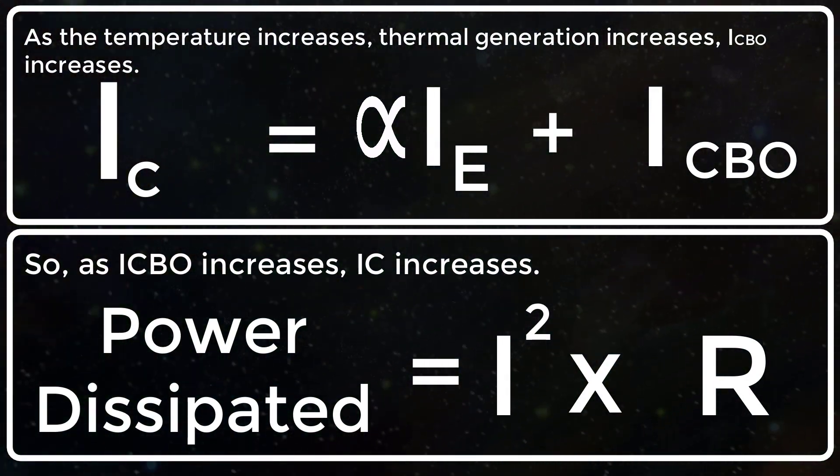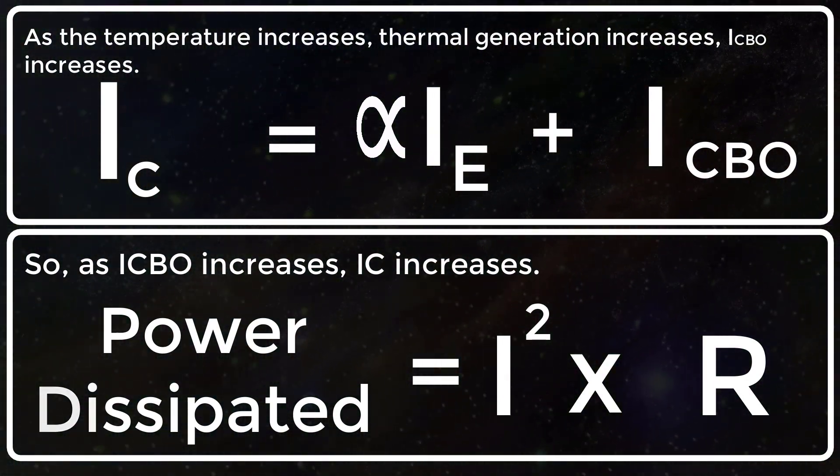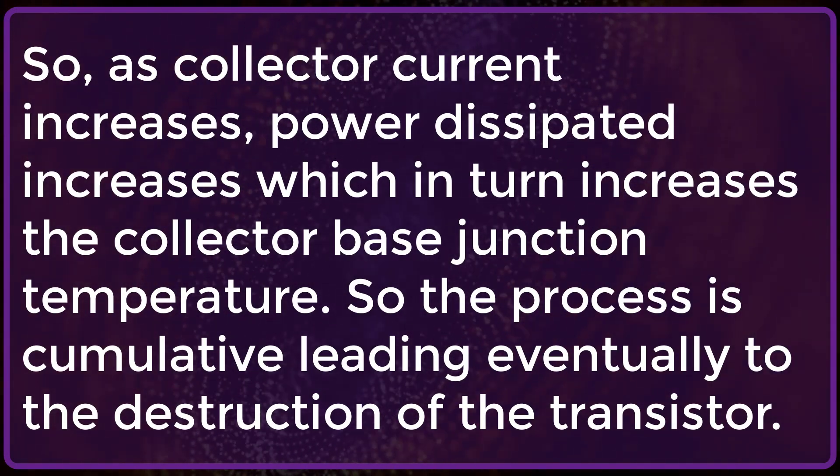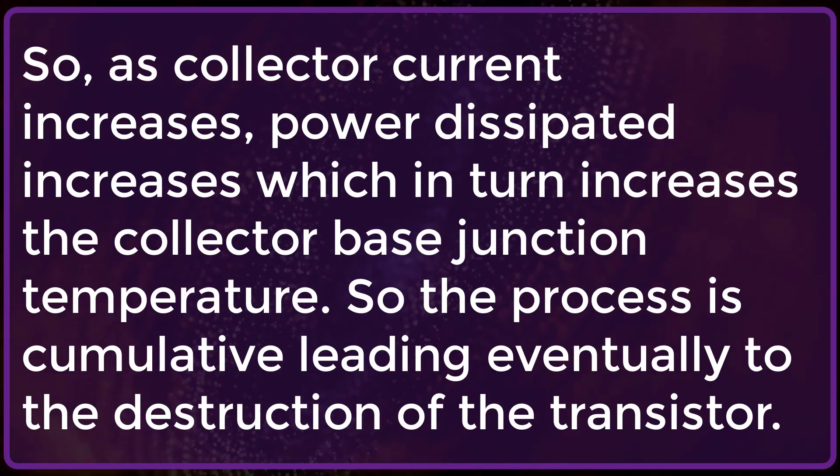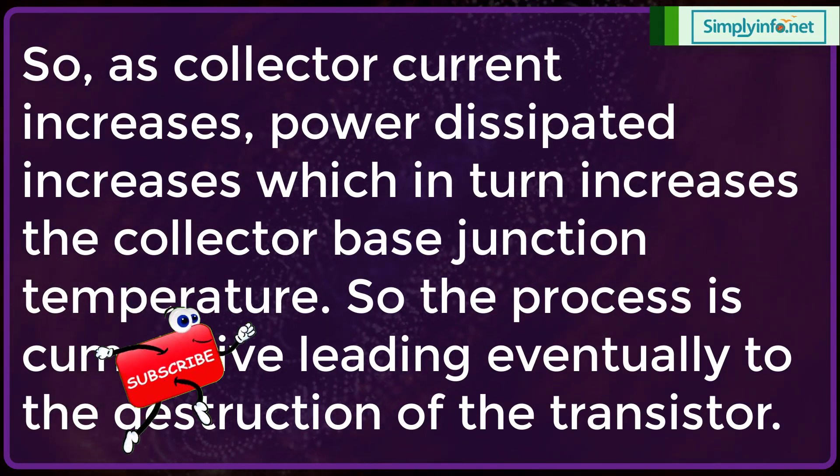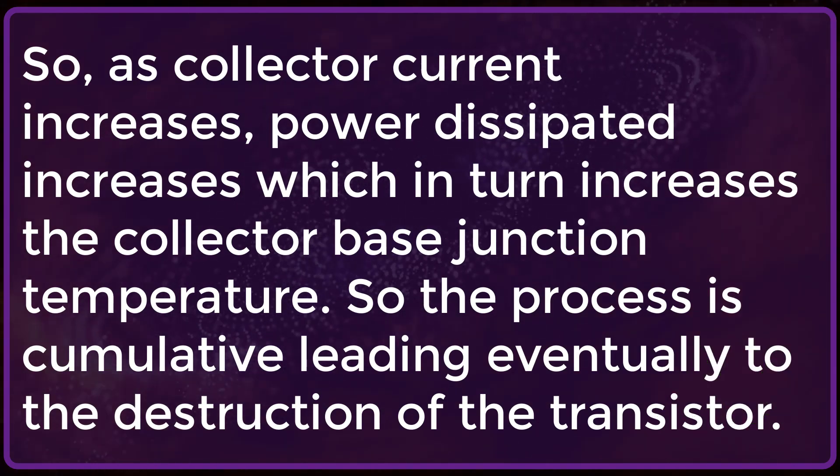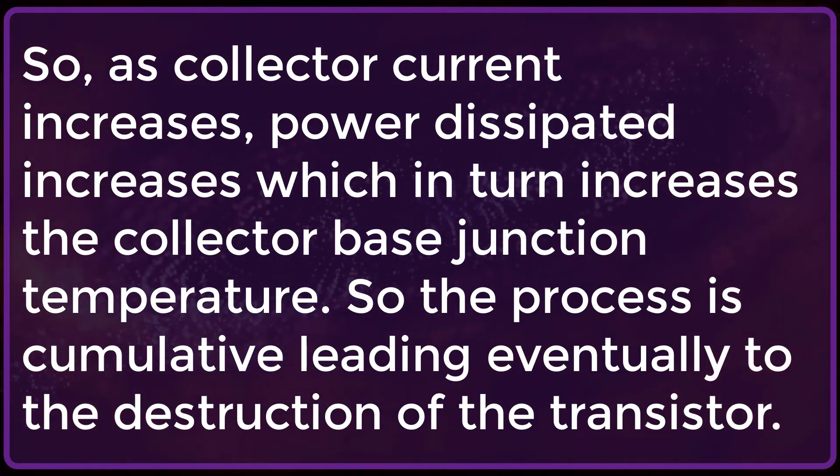Power dissipated is equal to I squared into R. So as collector current increases power dissipated increases which in turn increases the collector base junction temperature. So the process is cumulative leading eventually to the destruction of the transistor.